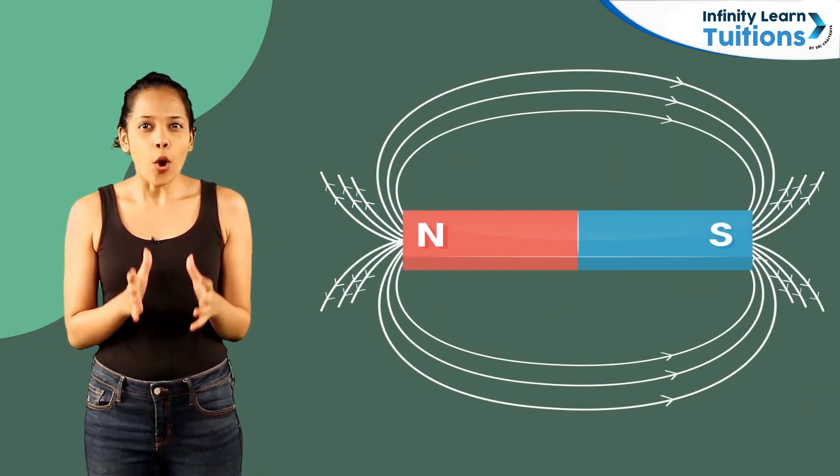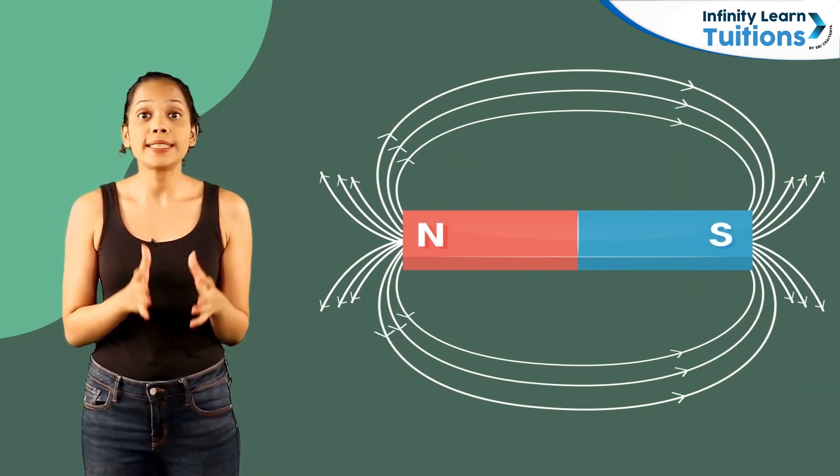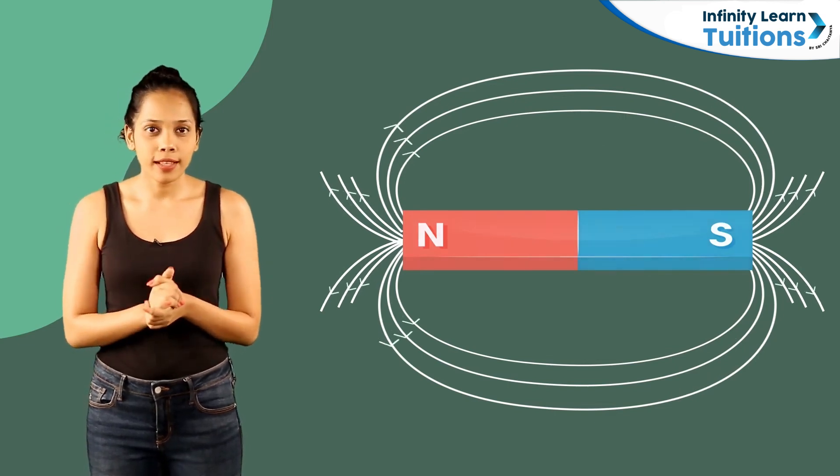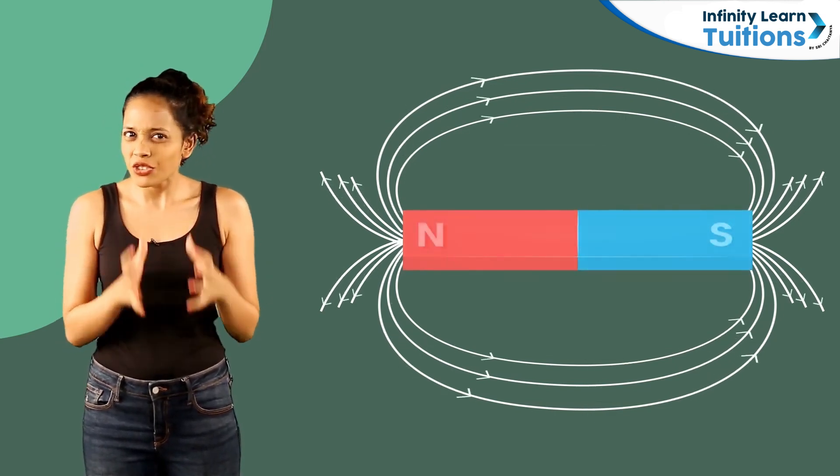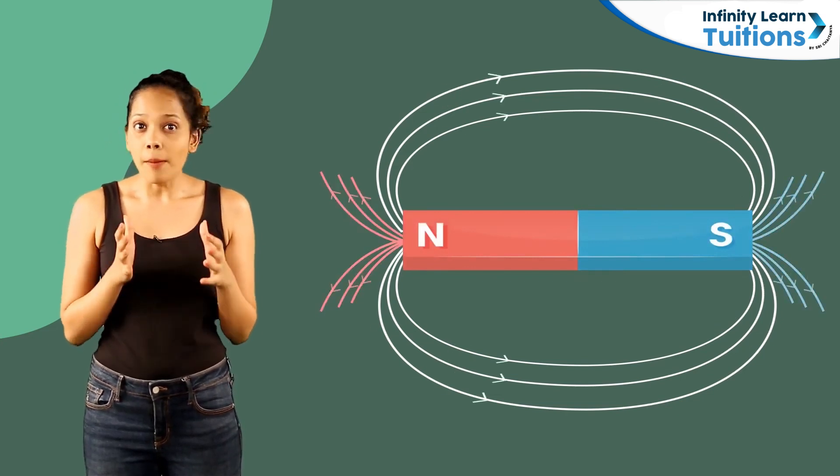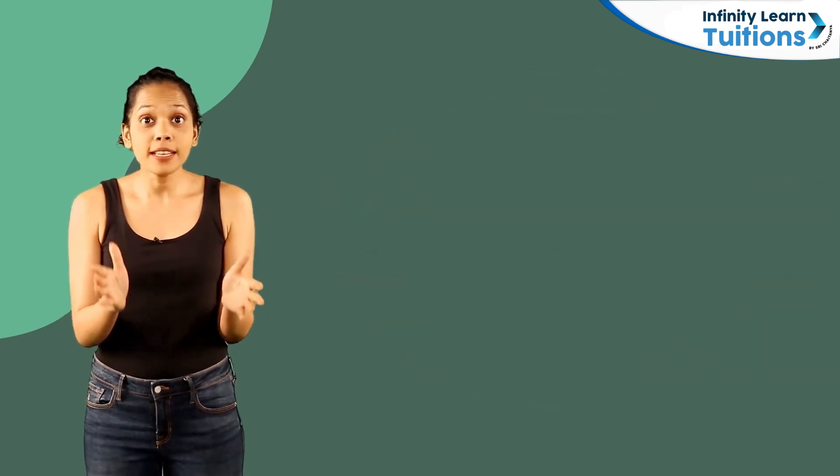These field lines always extend from the north pole of a magnet to its south pole and they never intersect each other. Since magnets are strongest at the poles, the lines of force are more crowded near the poles.